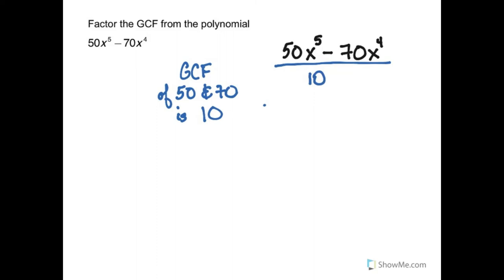Next we look at the variables. The greatest common factor of variables is pretty easy to find. It's the lowest power that appears in the expression. Because x fourth is a factor of x fifth. x fourth times x equals x fifth. So I'm going to add in that greatest common factor of the variables, x fourth.